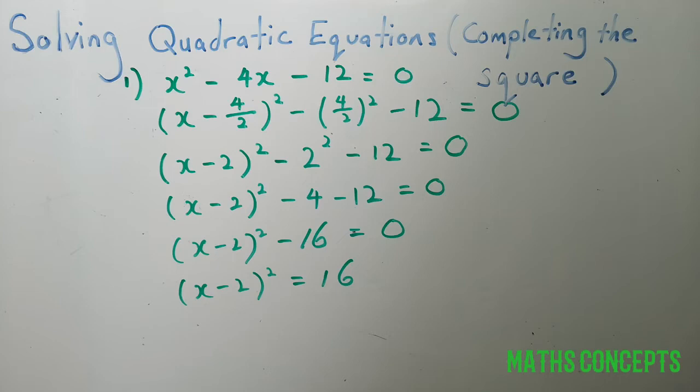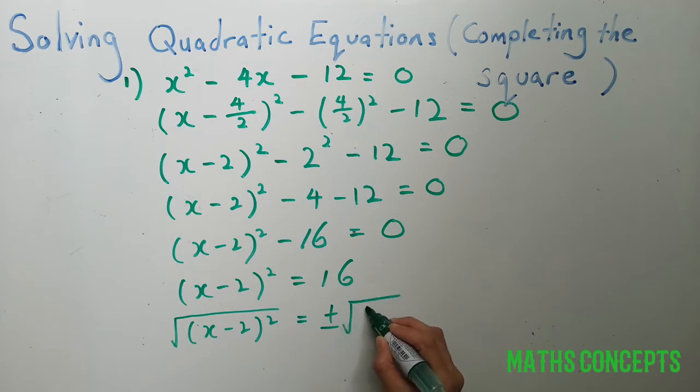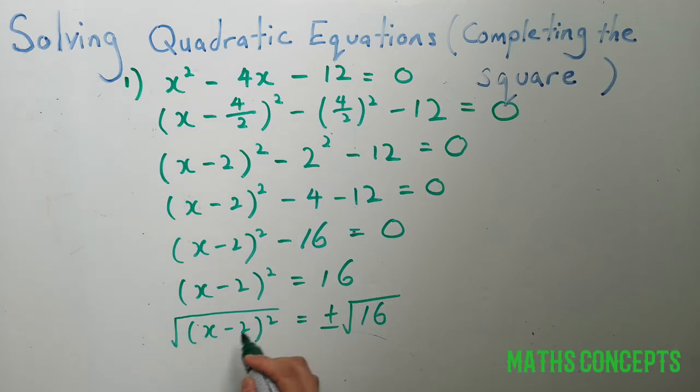Okay, so now we have to square root both sides in order to solve for x. So when you square root both sides, this x minus 2 squared will be equal to plus minus square root 16. So how do we get rid of the square here? When you square root it, you will just remove it, and that gives you x minus 2.